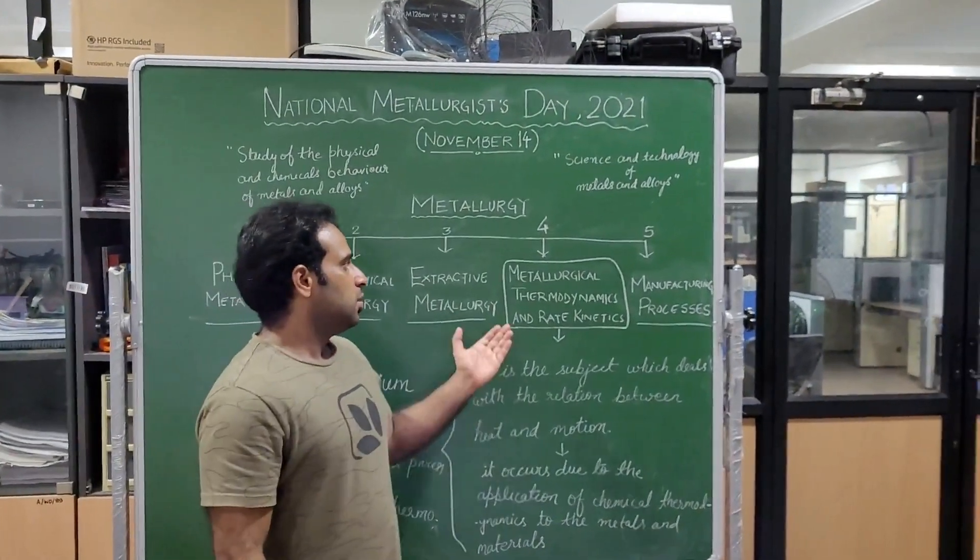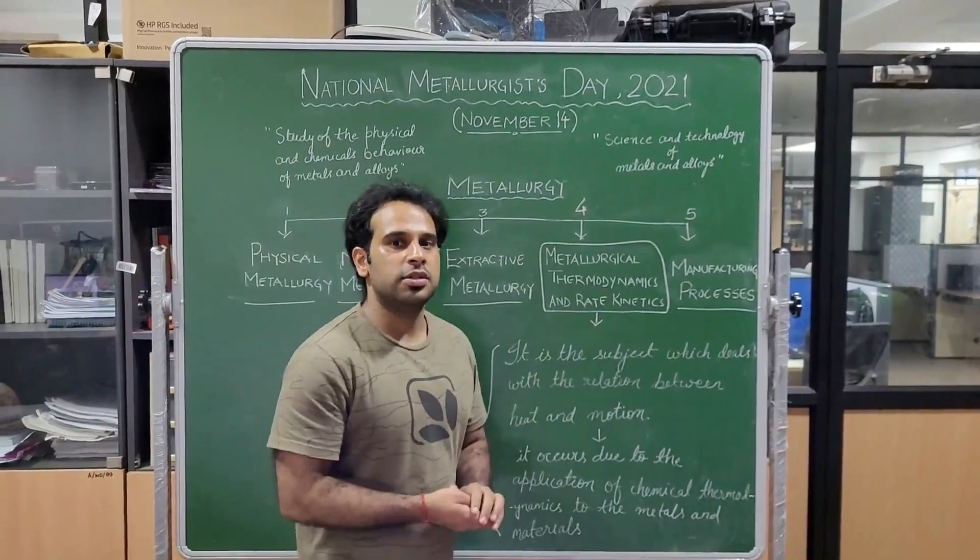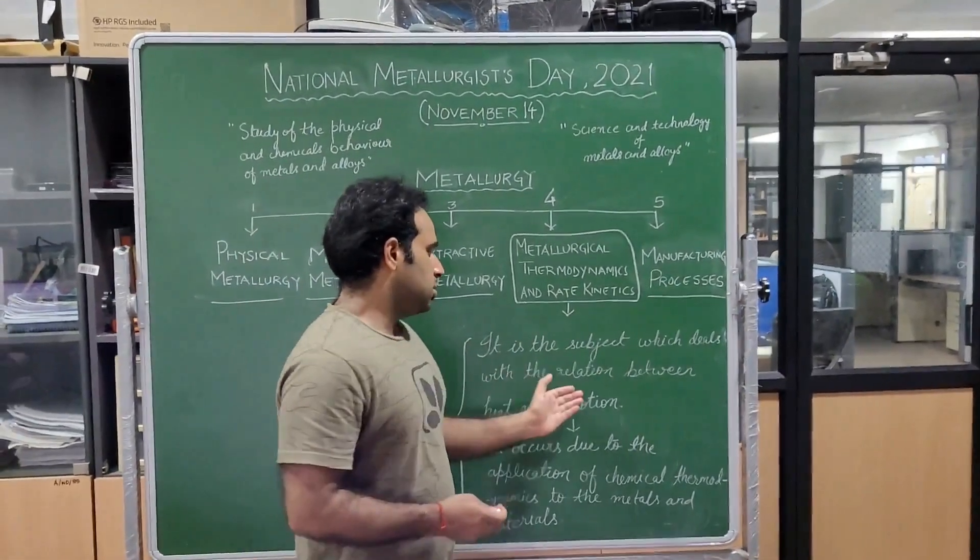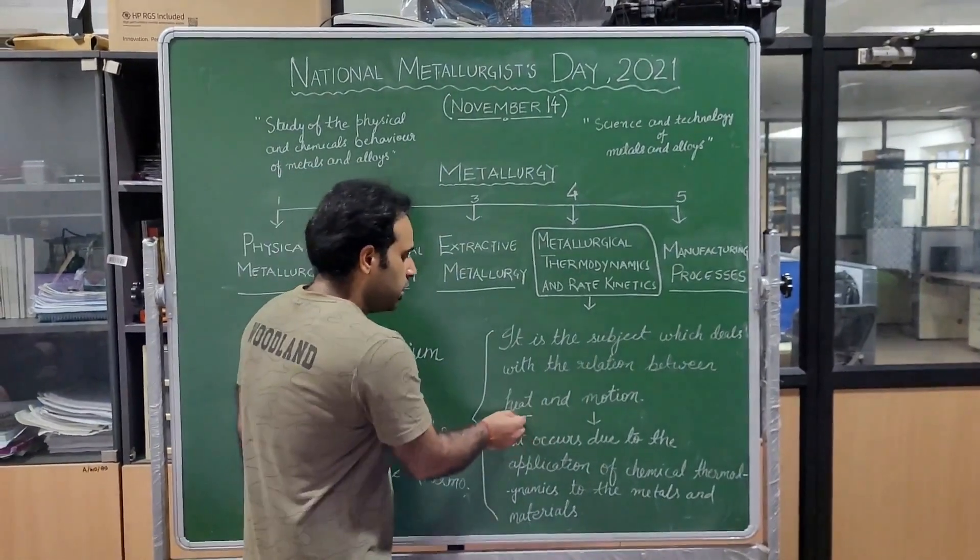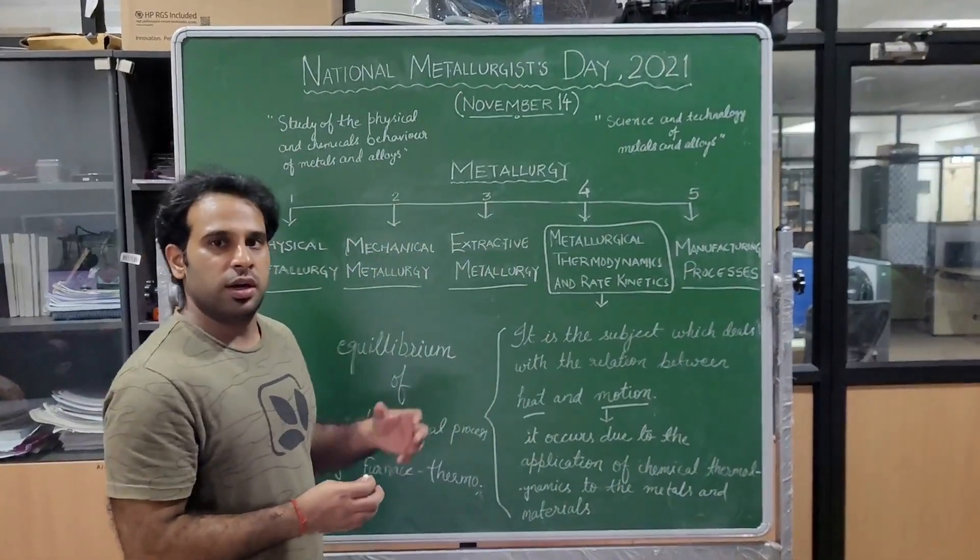Now we will understand the fourth classification, that is metallurgical thermodynamics and rate kinetics, which is basically the subject that deals with the relation between heat and motion. Heat and motion here are basically correlated and studied.